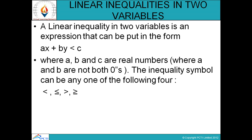A linear inequality in two variables is an expression that can be put in the form ax plus by less than c. When we talk about a linear inequality, the condition is not equal — that means we use greater than or less than signs. We have two variables here, and the equation is ax plus by is less than c, where a, b, and c are real numbers. The main condition is that a and b both cannot be zero.